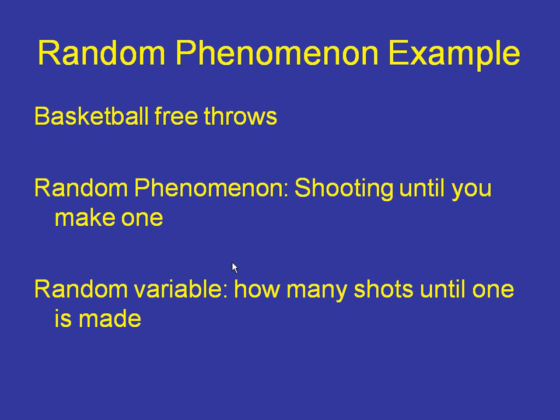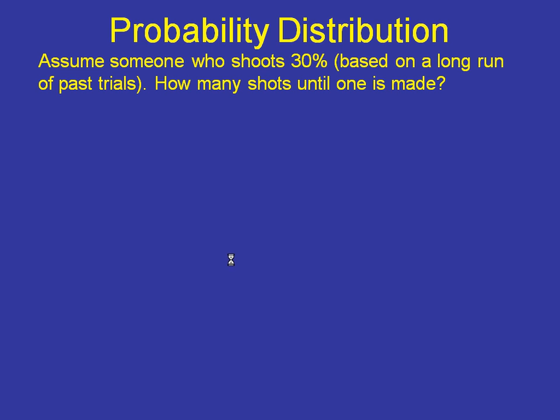Let's focus on a specific one here. Here's a random phenomenon: Basketball free throws. Let's say that we are going to shoot until we make one. And the random variable is how many shots is it going to take until we make one. So really, we don't know how many shots we're taking. We're just going to shoot until we make one. Let's assume that somebody shoots 30% from the free throw line based on past information.